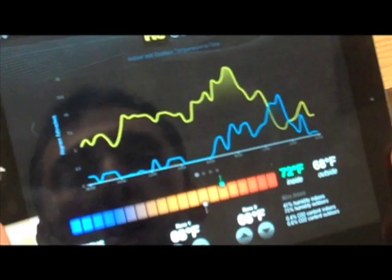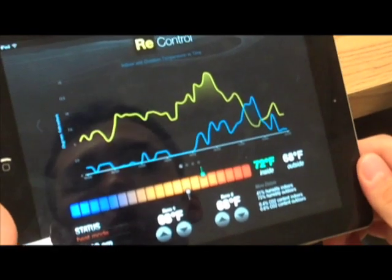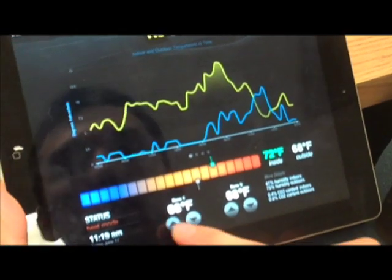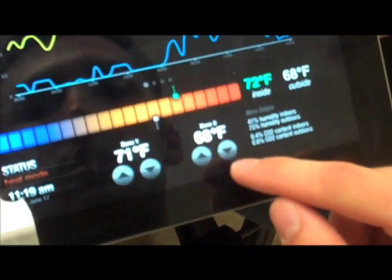So it gives you a plot over time of the energy of the two different zones. We have two zones in the house, so the yellow and blue are two separate zones. And then you can change the set point for the two zones using these buttons here.